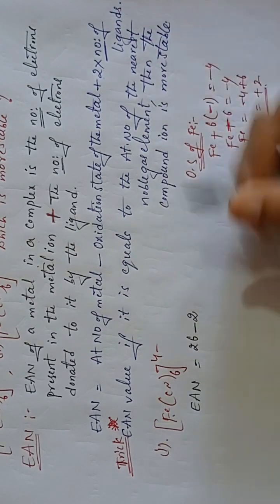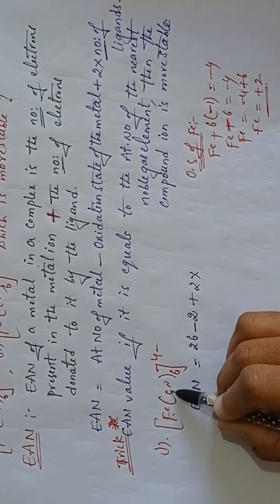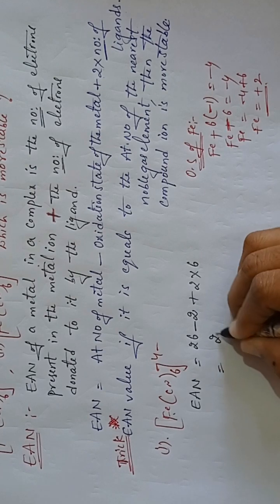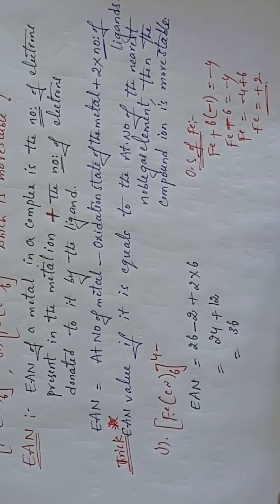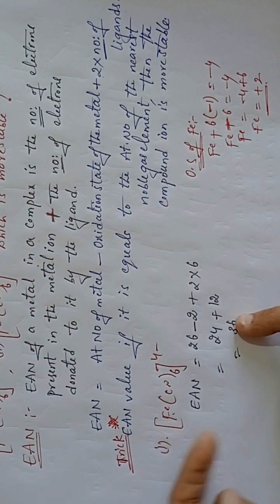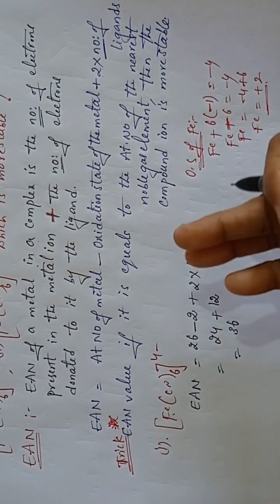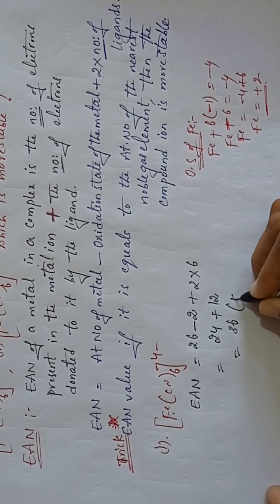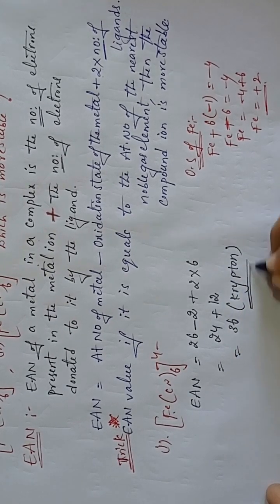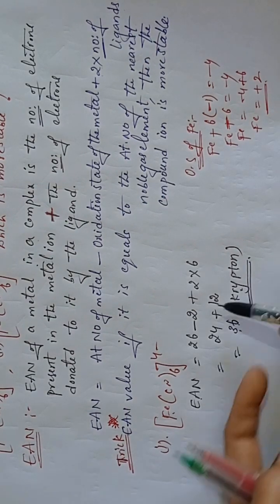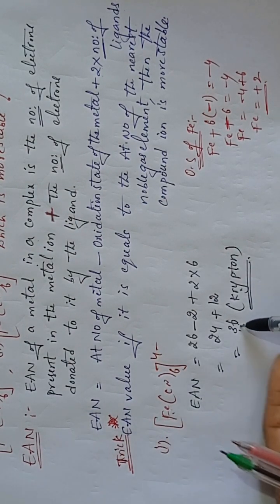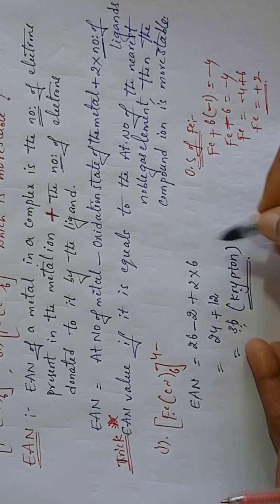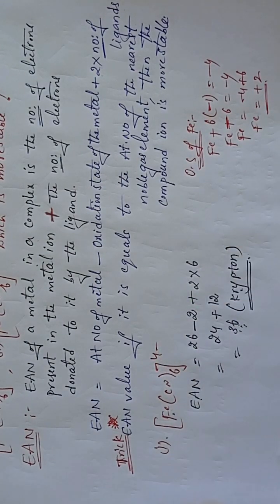Next, plus 2 into number of ligands. There are 6 ligands, so 2×6 = 12. EAN = 26 − 2 + 12 = 36. The EAN value of iron is 36, which is the atomic number of the nearest noble gas element to iron — Krypton. So this compound is more stable.